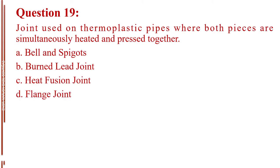Question number 19. Joint used on thermoplastic pipes where both pieces are simultaneously heated and pressed together. A. Bell and spigots. B. Burned lead joint. C. Heat fusion joint. D. Flange joint. The answer is Letter C, heat fusion joint.